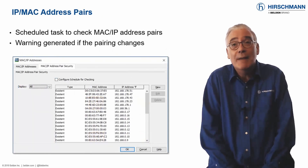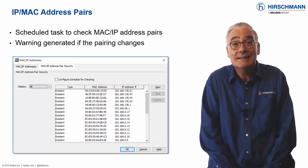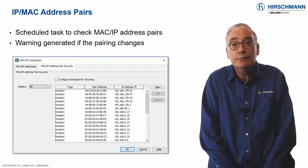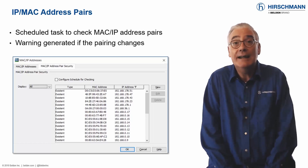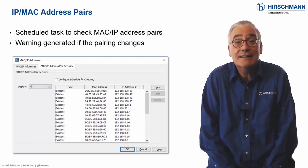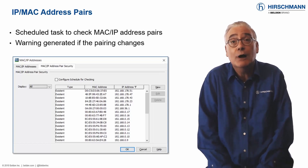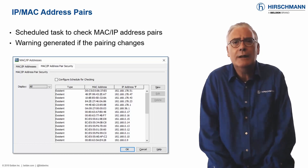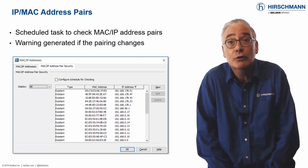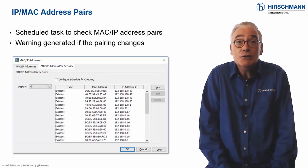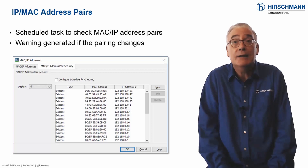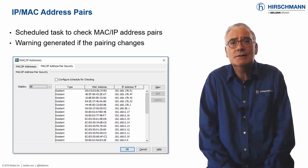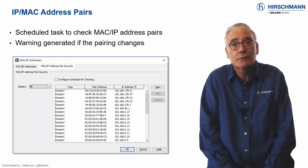Attackers are aware of many methods to get access to your network. One of the most common techniques is known as spoofing. During a spoofing attack, the attacker will take the IP address of an existing device and assign it to his own PC. As firewalls and access control lists are typically configured for IP addresses, the attacker's PC will get the same network access as the original device. Industrial HiVision can warn you if a MAC-IP address pair changes, giving you the chance to investigate this possible security breach.